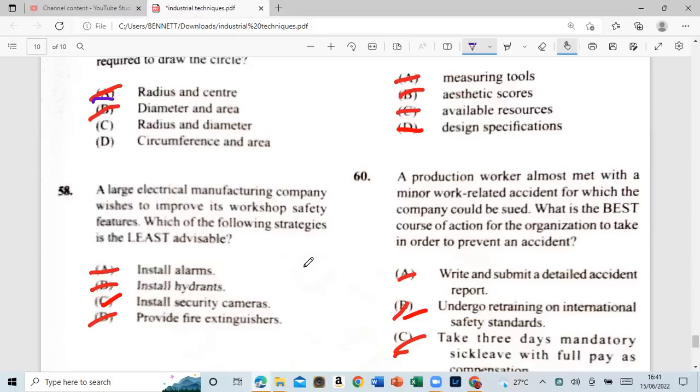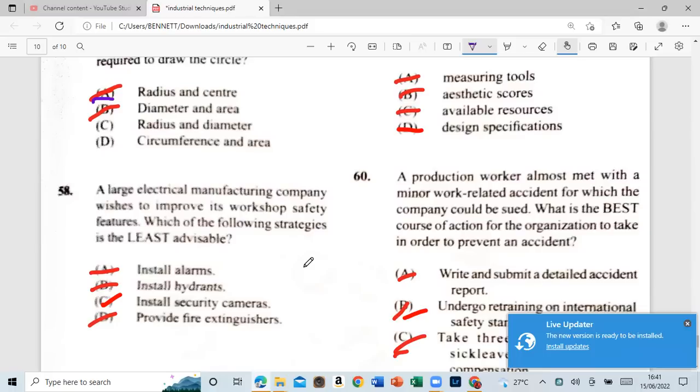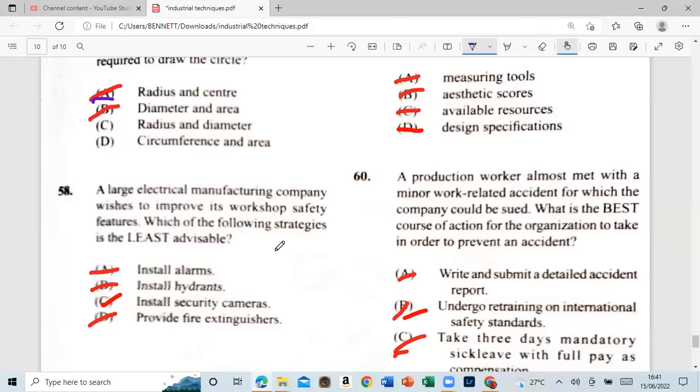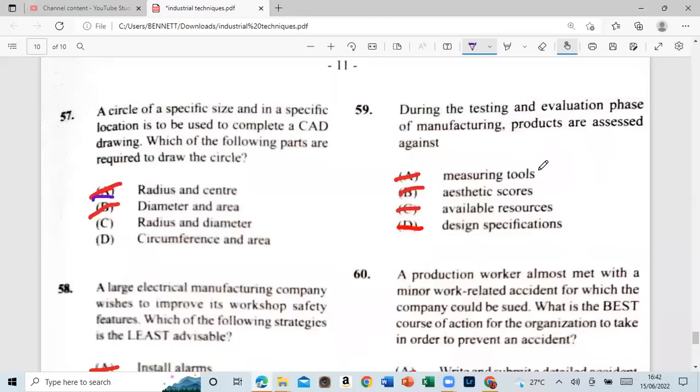58: a large, a large electrical manufacturing company, which is to improve its workshop safety features. Which are the following strategies is least advisable? A: install alarm. B: install items. C: install security cameras. B: provide fire extinguishers. Please, you know, so it's already. A large electrical manufacturing company, which is into the workshop safety. Install security cameras. Right. Install alarm. Why? Why couldn't we install alarm? Oh, oh, oh. Can we do that? Install security. Come and go watch. My name is Redamant. I'm going to get off of this mattress.